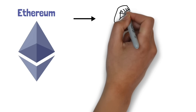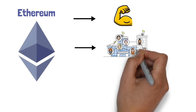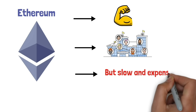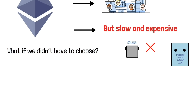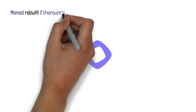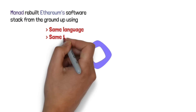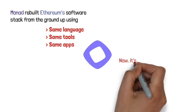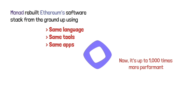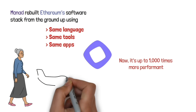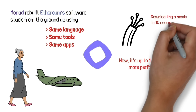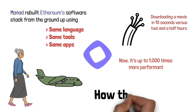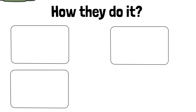We've got a problem. Ethereum is powerful — tons of developers, TVL, collateral, technical resources, apps — but a bit slow and expensive. Other options are fast, but not compatible. What if we didn't have to choose? Enter Monad. Monad rebuilt software for Ethereum from the ground up. Same language, same tools, same apps. But now it's up to 1,000 times more performant. That's not a small upgrade — it's like going from a grandma walking to a supersonic jet, or going from dial-up internet to fiber optic. It comes down to four key breakthroughs.